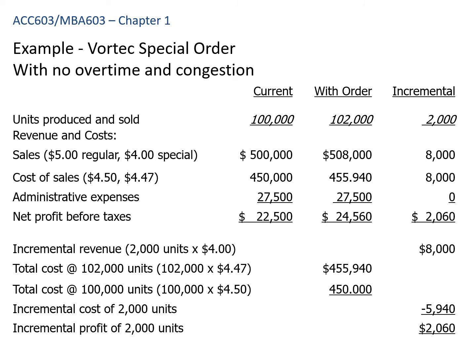Here's a brief example of what a managerial accountant would do. We've received a request to buy product that normally sells for $5, but the customer wants it at $4. We compare costs of sales under both cases — if we don't take the order versus if we take it — and look at the incremental difference. In this case there's an incremental profit of $2,060 from taking the extra 2,000 units, so it's a good idea to accept the order. We'll get into this in more detail in the next chapter.